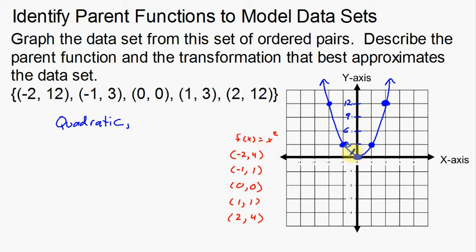Now I'm going to graph those quickly. Negative 2, 4 is about right here — remember my increments are different, so 3, 4. Negative 1, 1 is about right here. 0, 0 is right there. Then 1, 1, and 2, 4. Now I'm going to draw this in red. So the blue one is the data, the red one is my parent function. You might want to write what they are to keep track — there's the parent, and this one is going to be the data.